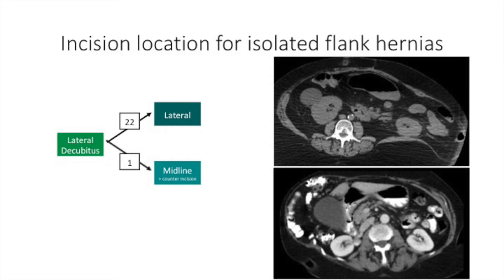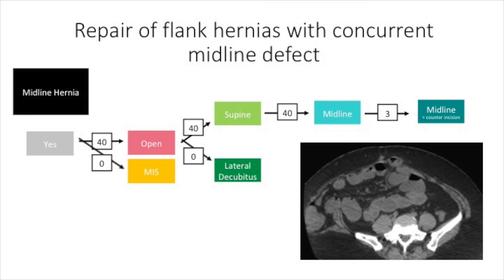When the medial edge of the defect was close to the midline, another incision may be made medially. In contrast, flank hernias with a concurrent midline defect were always repaired the same way: open with the patient supine and through a midline incision, sometimes with a counter incision over the flank defect to optimize the lateral aspect of the repair.